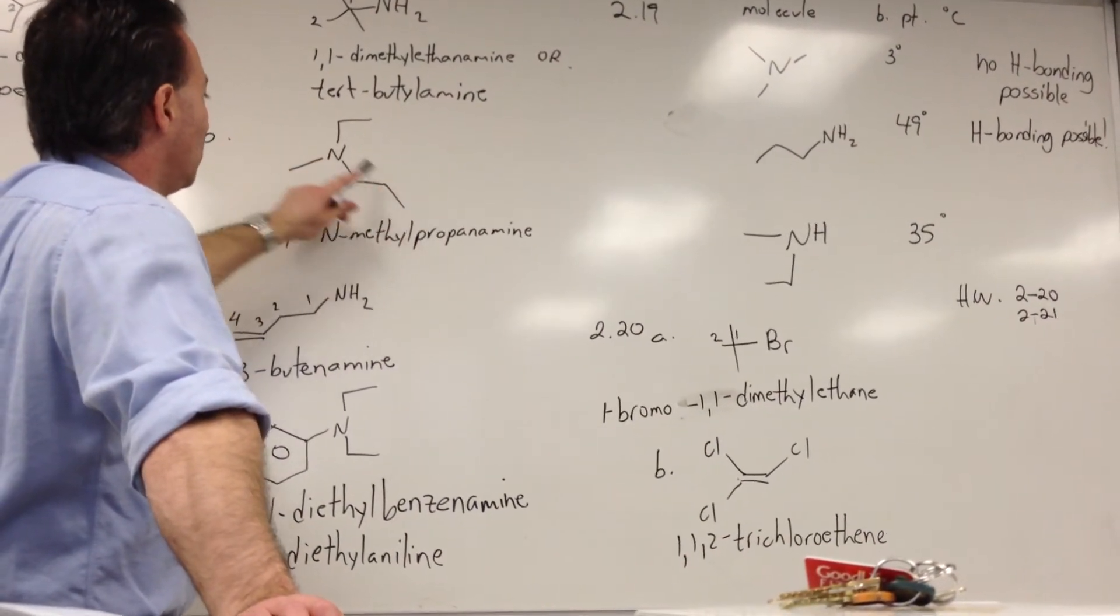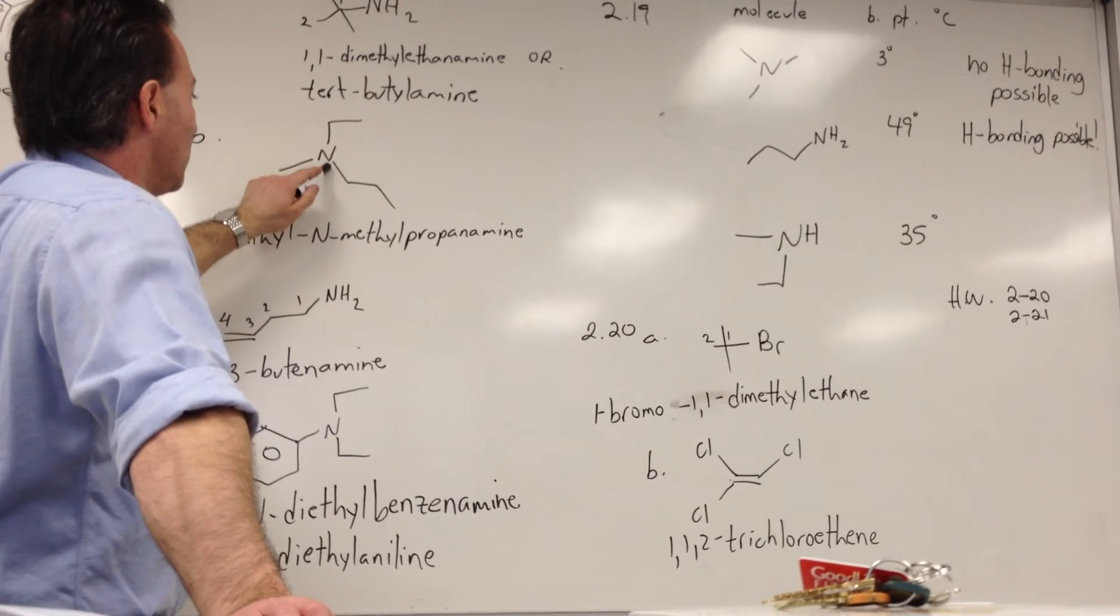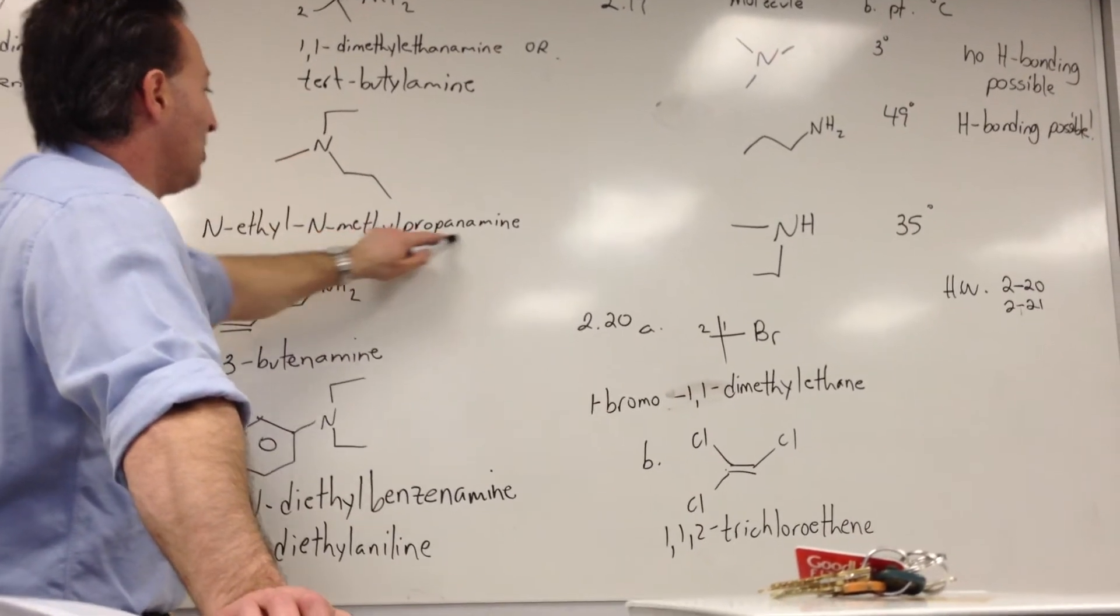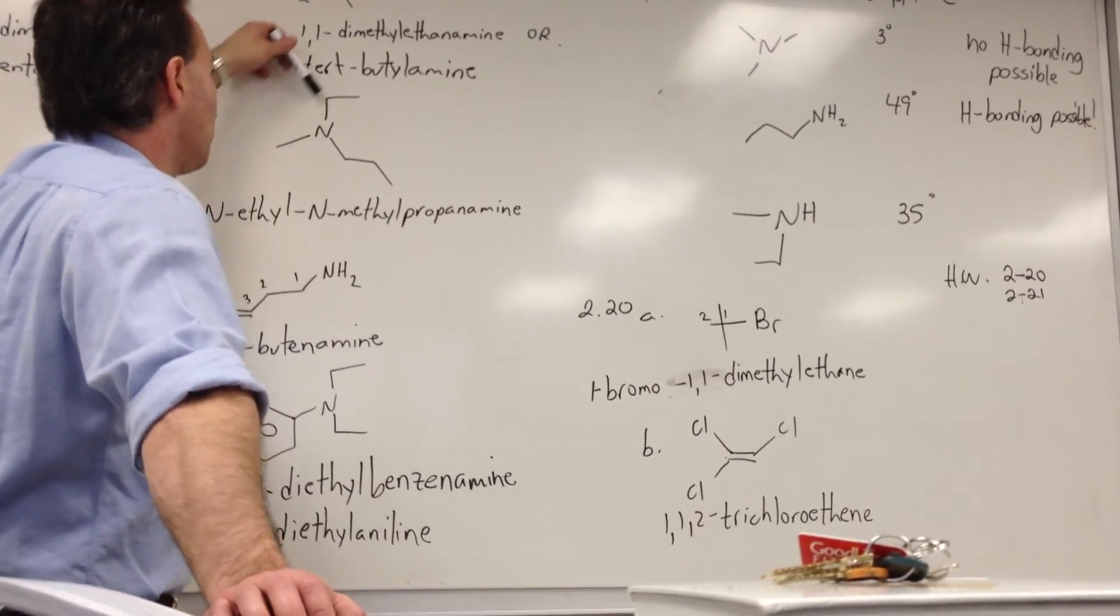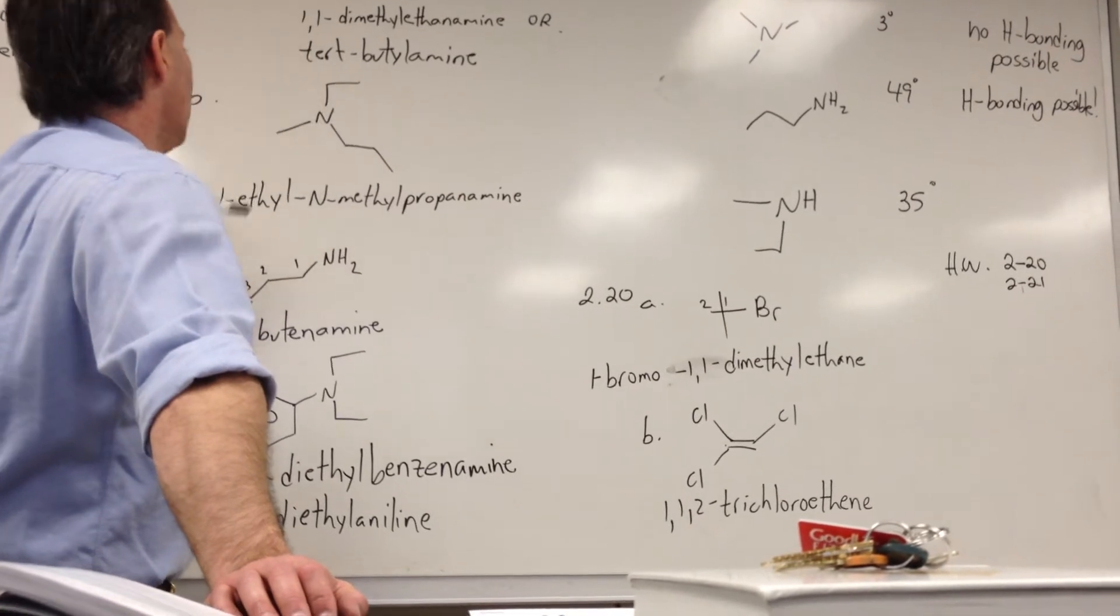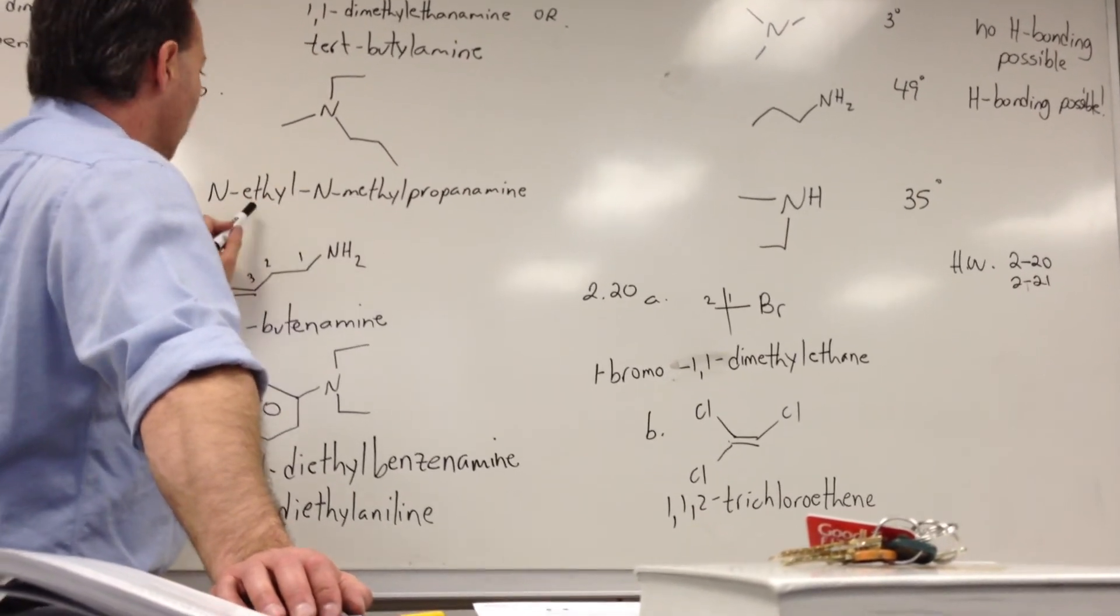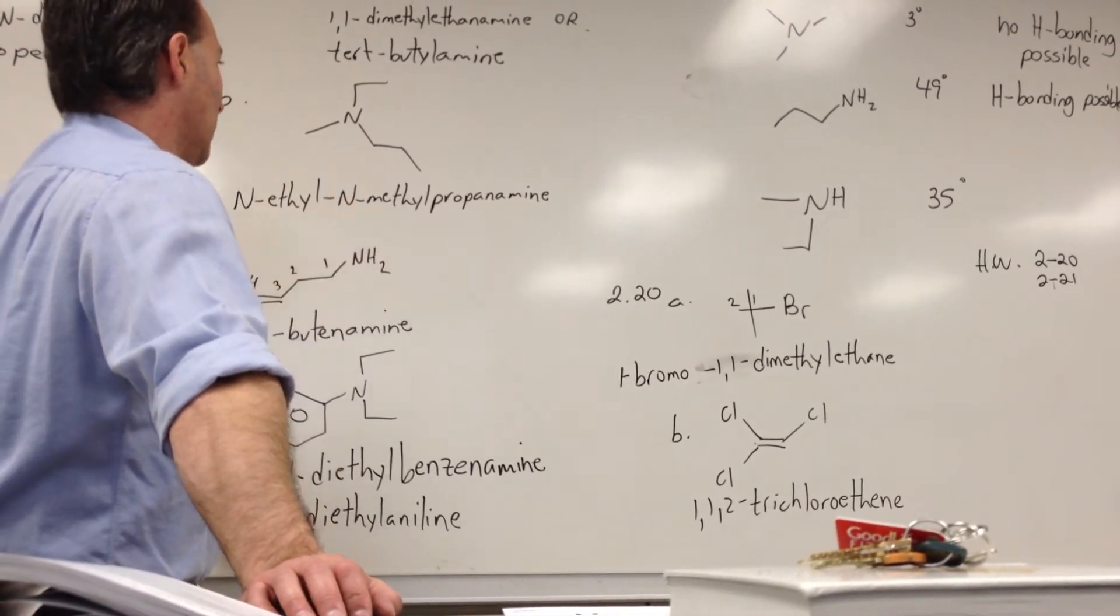Here, the longest chain is a propane group attached to the nitrogen. So we say propanamine, and then you have a methyl group and an ethyl group attached to the nitrogen. So we say N-ethyl and methyl. So notice ethyl precedes methyl alphabetically.